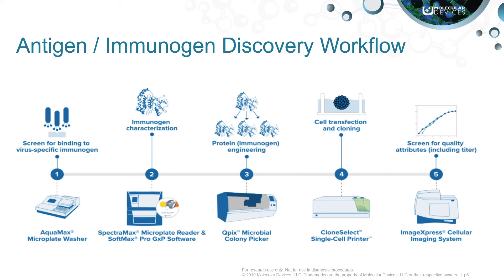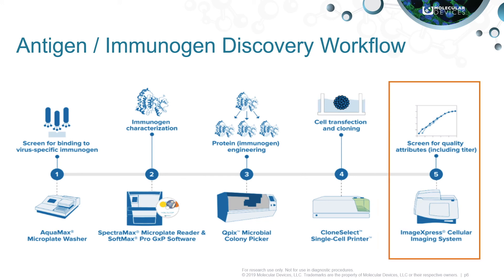Following single-cell cloning, cell lines are monitored for growth and assessed for protein expression. The immunogen is then purified and prepared for injection into an animal in order to induce an immune response. Antibodies generated from the animal are then screened in a virus neutralization assay to determine vaccine efficiency. This can be performed using Molecular Devices ImageXpress PICO platforms, which allow for high-throughput imaging and analysis of the antibody's ability to inhibit viral entry or infection into cells grown in culture.